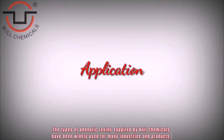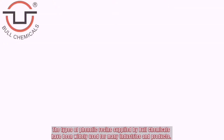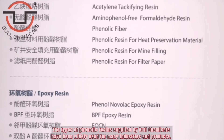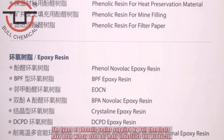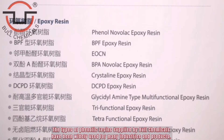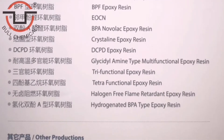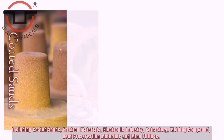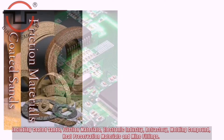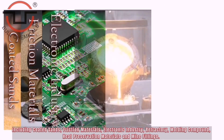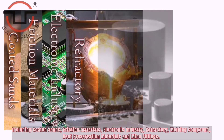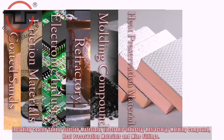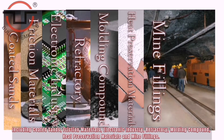The types of phenolic resins supplied by Bull Chemicals have been widely used for many industries and products, including coated sands, friction materials, electronic industry, refractory, molten compound, heat preservation materials, and mine fillings.